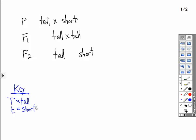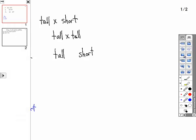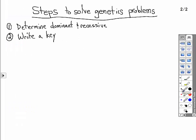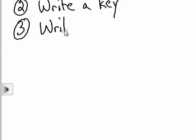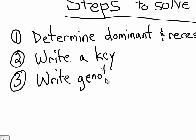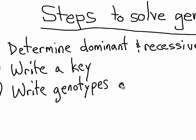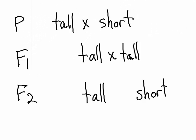The next step in solving a genetics problem is to write the genotypes of the parents. Remember, genotypes are what letters we use to represent dominant and recessive.